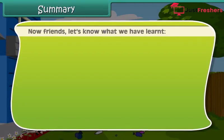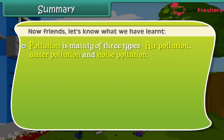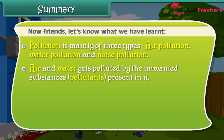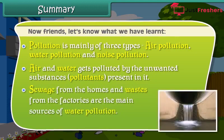Now let's recap what we have learned. Pollution is mainly of three types: air pollution, water pollution, and noise pollution. Air and water get polluted by the unwanted substances — pollutants — present in them. Sewage from homes and wastes from factories are the main sources of water pollution.